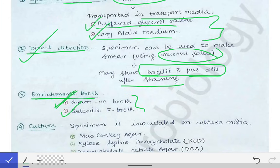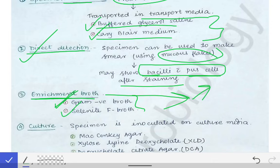We need enrichment broth because the colon contains many commensals which may also grow in culture media. To selectively grow Shigella, we use inhibitory substances that inhibit other bacteria but allow Shigella to grow. These enrichment broths are liquid media containing substances that inhibit the growth of commensal gut bacteria while promoting the growth of Shigella.